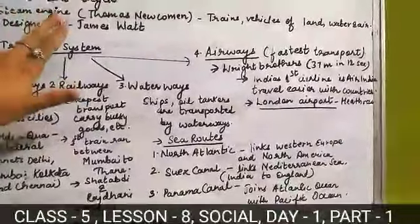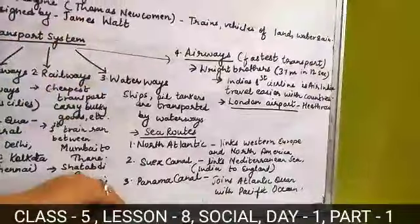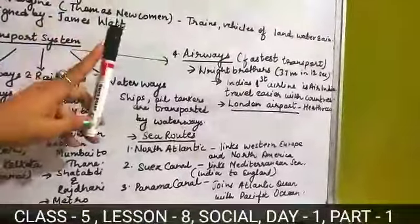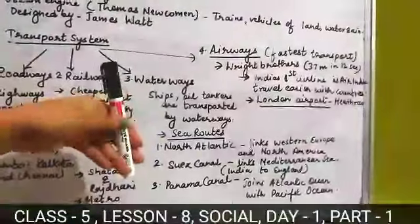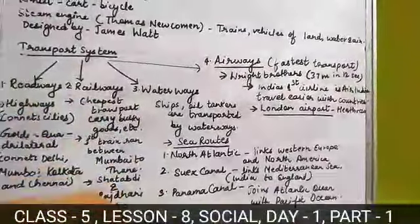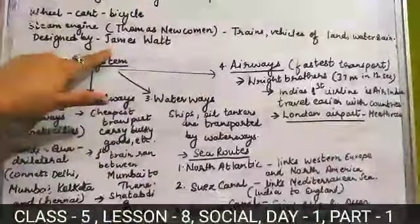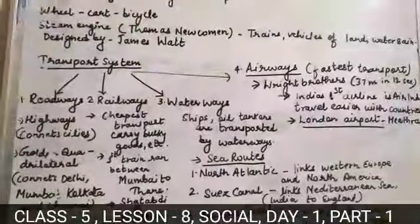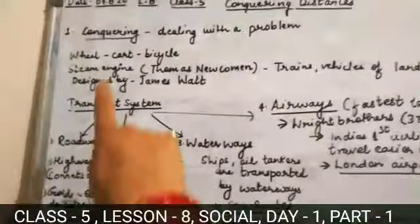The steam engine model was designed by James Watt. The structure is like this pen — white in color, with black at the top. This structure was described by James Watt. But who invented it? Thomas Newcomen invented it, which made travel much easier.